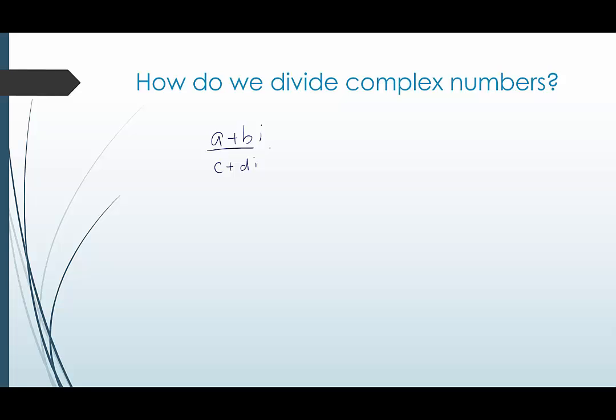So what we do instead is we try to figure out how can we get a real number in the denominator. And that's when we want to use the complex conjugate. So to divide complex numbers, multiply both the numerator and denominator by the complex conjugate of the denominator.